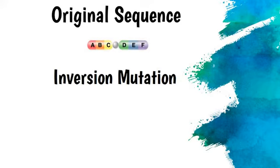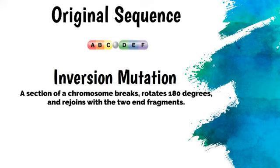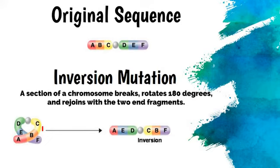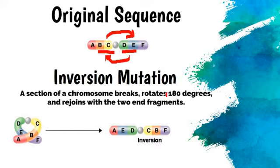Another type is inversion mutations. This is where a section of a chromosome breaks, rotates 180 degrees, and then rejoins with the two end fragments. Looking at the example, what we have is the chromosome inverting — you can see it really bending. And instead of reading A, B, C, it reads A, E, D because the E and D section has snapped off and rotated. So all of this middle section is rotated around 180 degrees and joined on again — this is an inversion.